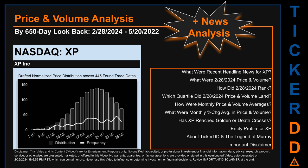Now that we have made our lawyers happy, capitalist brothers and sisters, let's get started. XP went public on December 11, 2019, which was roughly four years and two months ago. Looking back 650 calendar days from Wednesday, February 28, 2024 to Friday, May 20th, 2022, we found 445 applicable trade dates for use in our analysis. The chart shown on this page is our initial attempt at studying the price for XP.